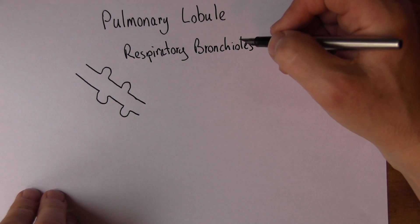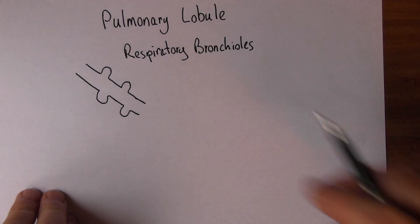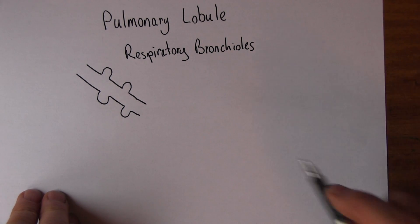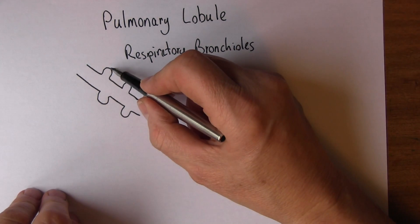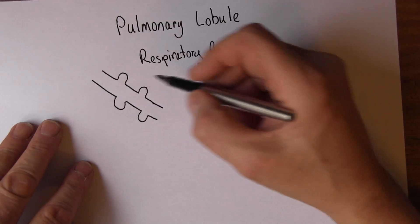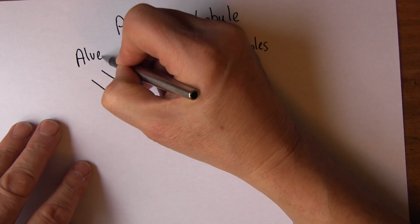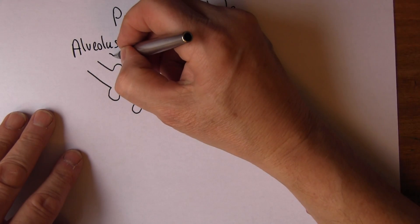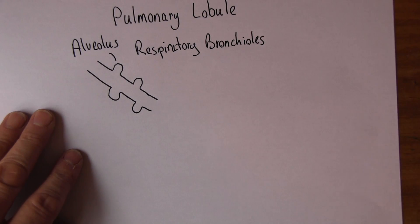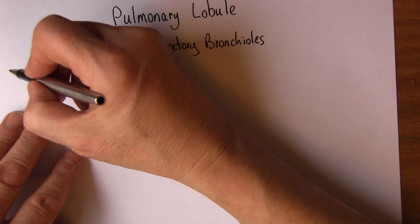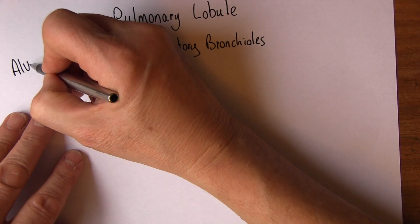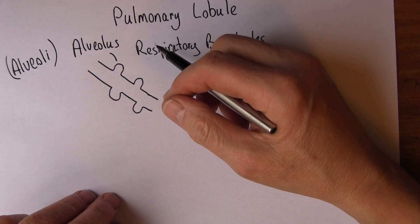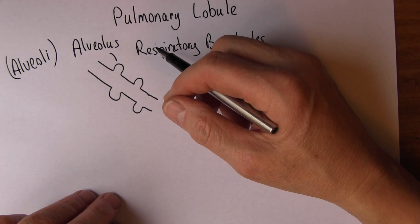Respiratory bronchioles have these air sacs on the side of them to increase the surface area. One of these is called an alveolus — alveolus is singular — several of them would be called alveoli. So one alveolus, two or three or four or five alveoli.